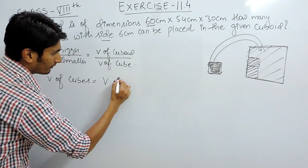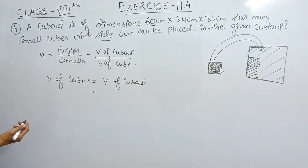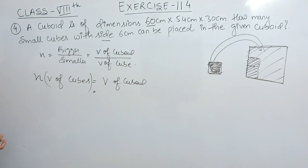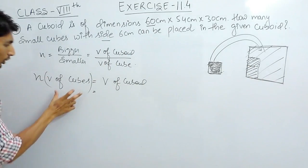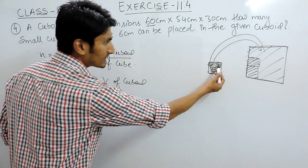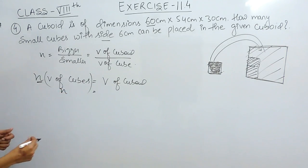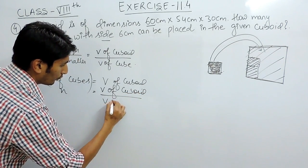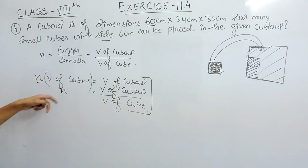Here the volume of cubes—because we are using this small cube n number of times—its volume will become n multiplied by the volume of one cube. So n, which is the number of times we are using it, should be equal to the volume of cuboid divided by volume of cube. This is how this formula is formed.